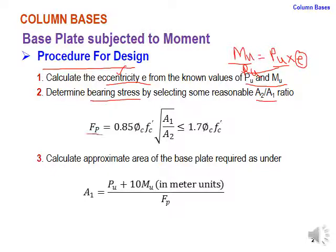In the second step, determine the bearing stress fp by selecting a reasonable A2/A1 ratio. fp is calculated using the formula: 0.85 φc fc′ √(A2/A1), which should be less than or equal to 1.7 φc fc′. In the third step, calculate the approximate area of the base plate required.